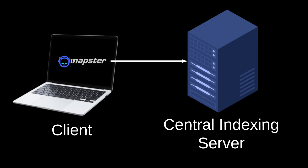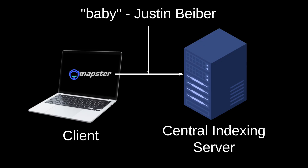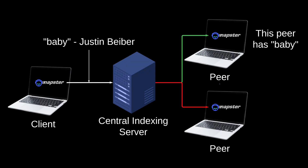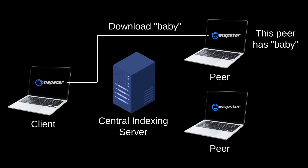Even though Napster technically used a peer-to-peer system, this was not completely decentralized. Napster had a centralized indexing server which was used to manage what content was available and where you could download it from. For example, let's say I wanted to download Baby by Justin Bieber. The server would tell me who had that song available for download. So I search Baby, go to the server, and instead of the server having to store the entire MP3 file, it would instead store an IP address or a location where I could download that file. Then when I make a request to actually download the file, I would be downloading from whatever IP address was specified by the central server, not from the central server itself.